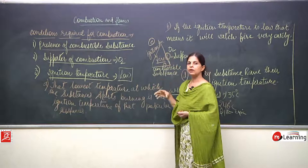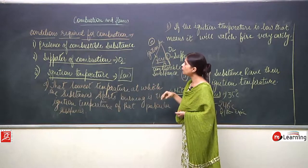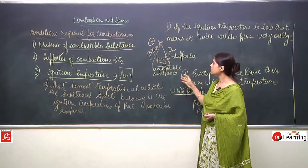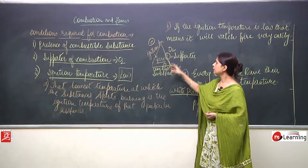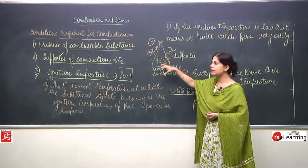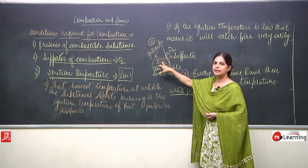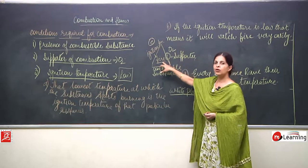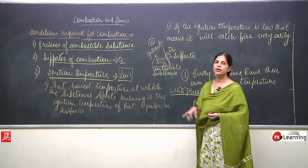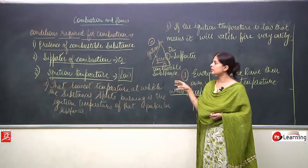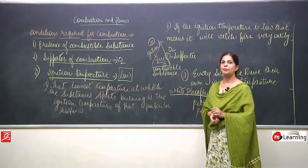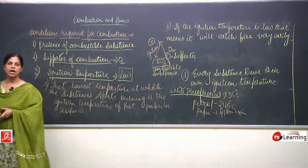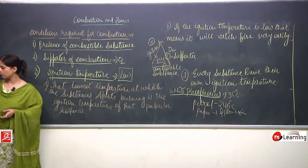To attain fire, these three requirements must be fulfilled: combustible substance, supporter of combustion, and ignition temperature. This was all about the conditions required for combustion. Now we will move to the next topic.